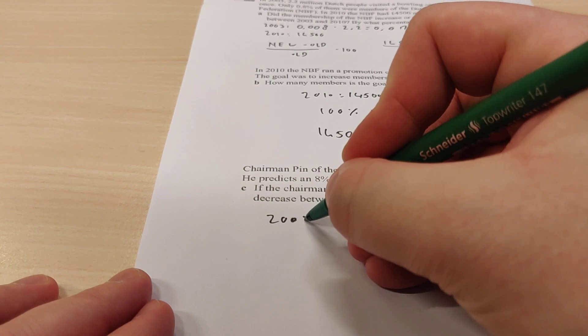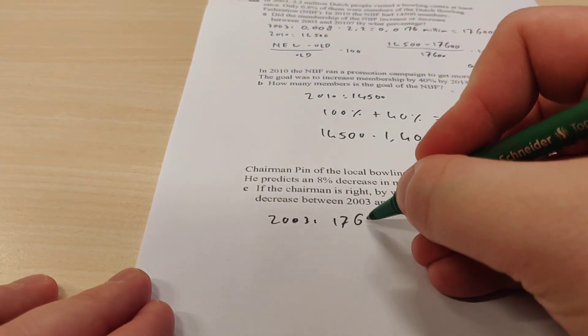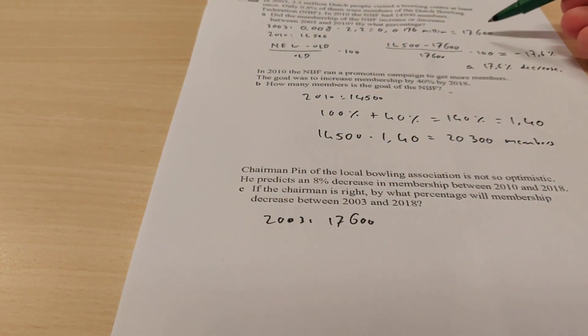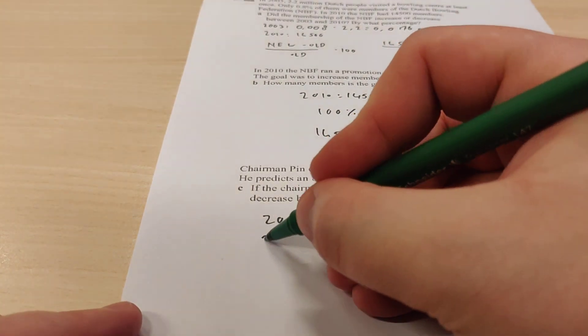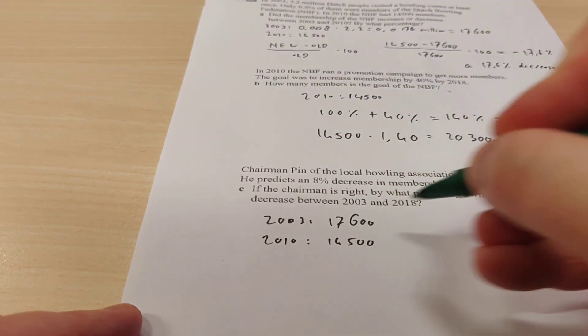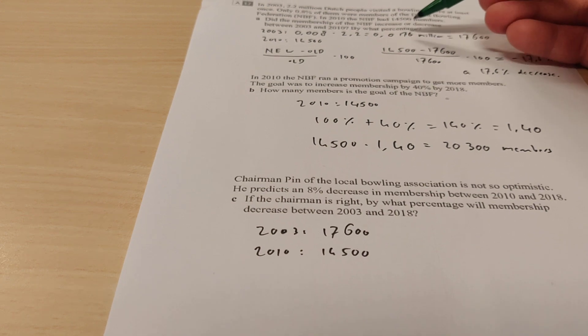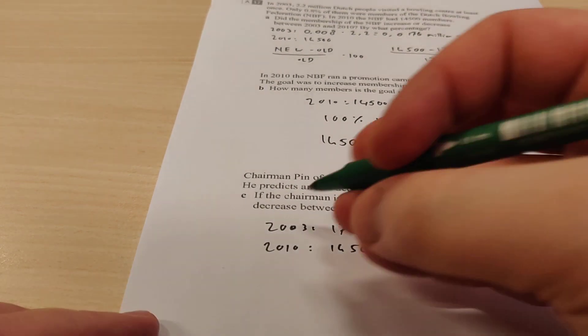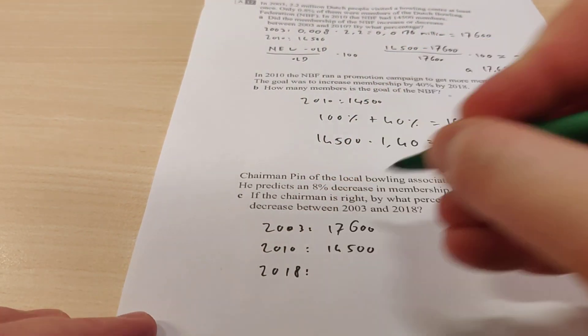So in 2003, there were 17,600 members. We calculated that over here, remember? In 2010, there were 14,500 members. It was given in the story over here. See that, 14,500 members. And then in 2018, we don't know.